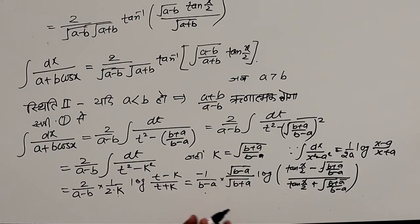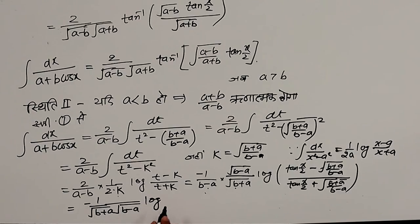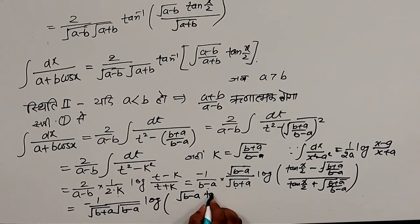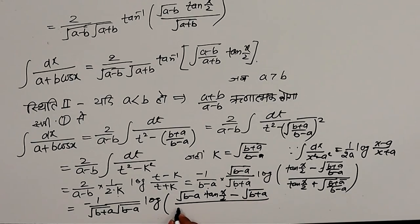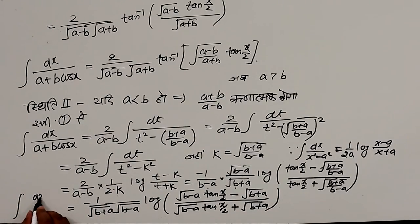Here the square root will cancel and we get: −1/(√(b+a)·√(b−a)) · log|(√(b−a)·tan(x/2) − √(b+a)) / (√(b−a)·tan(x/2) + √(b+a))|. Converting the minus sign using log(1/x) = −log(x): ∫ dx/(a + b·cos x) = 1/√(b²−a²) · log|(√(b−a)·tan(x/2) + √(b+a)) / (√(b−a)·tan(x/2) − √(b+a))| + C, when a < b.